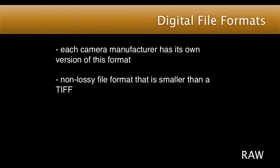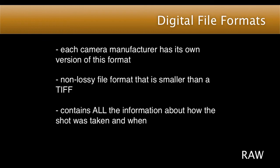The final option for a digital image file format is known as RAW. Each camera manufacturer has its own version of this format, and some even use a different RAW format for each model of their digital cameras. The advantage of RAW is that it is a non-lossy file format that is much smaller in size than a TIFF. Even though the file size is smaller, it contains all the information about how the shot was taken and when.